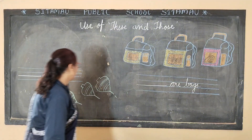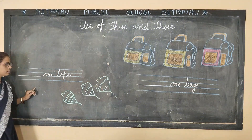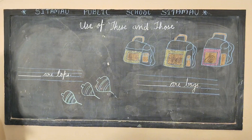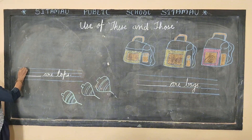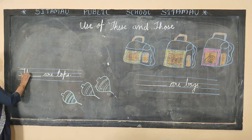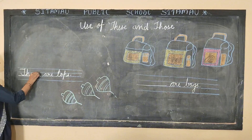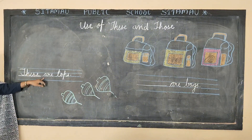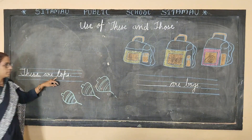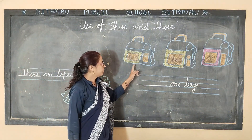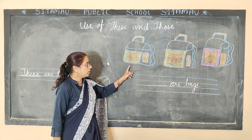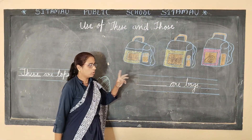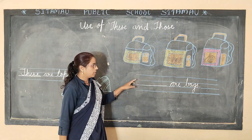So, here are three dots. I will write here 'these' — T, H, E, S, E — these. These are both sides. One, two, three. How many are here? Three pairs — more than one. Okay.